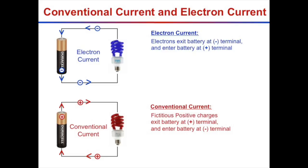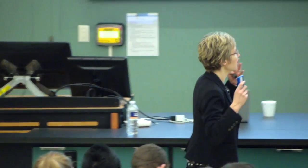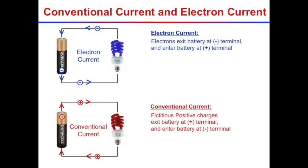The real physical thing in a circuit is that electrons move. Let's hook up a battery to a light bulb. What physically happens is that electrons pop off the negative terminal of the battery, move around, go through the light bulb and light it up, and pop back into the positive terminal. That's electron current — the real physical thing that's moving.